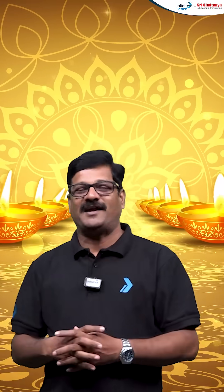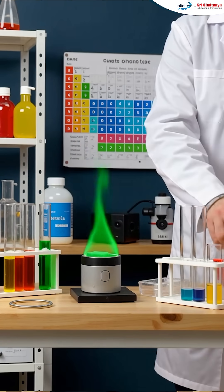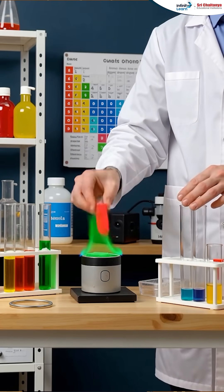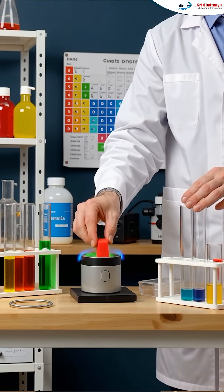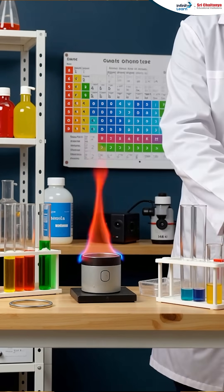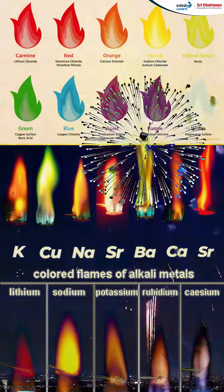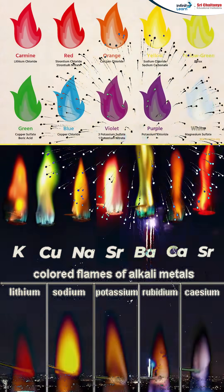When a metal salt is put in a Bunsen flame, you get different colors — this is called flame coloration. We can use this same flame coloration in qualitative analysis, and in firecrackers as well.